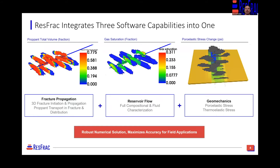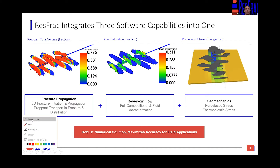The key to being able to do so accurately is coupling all these very dynamic processes happening in the subsurface. That begins with fracture propagation, where we have rocks actually cracking and fluid creating hydraulic fractures in three dimensions. Then proppant is transported and deposited in those fractures — you can see a gradation in concentration of where that proppant ends up.